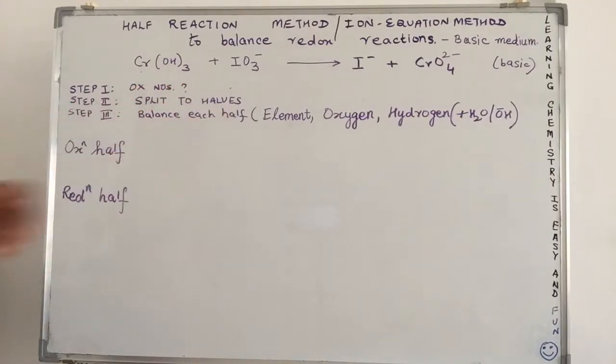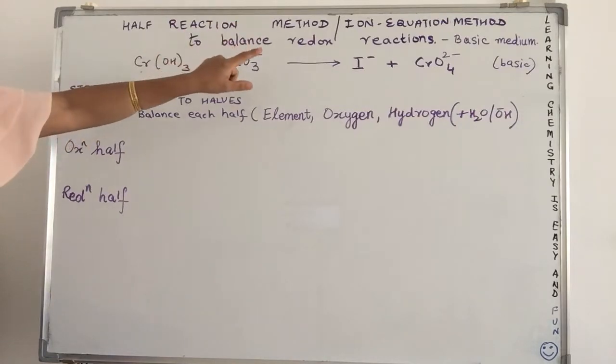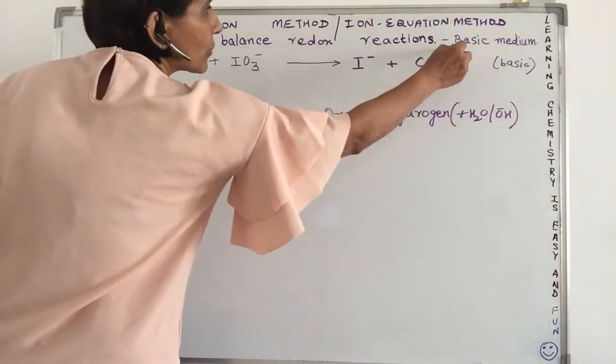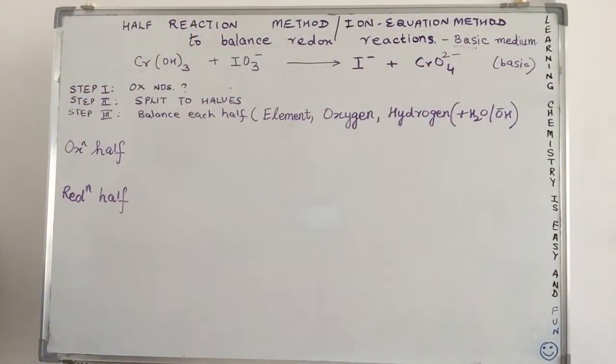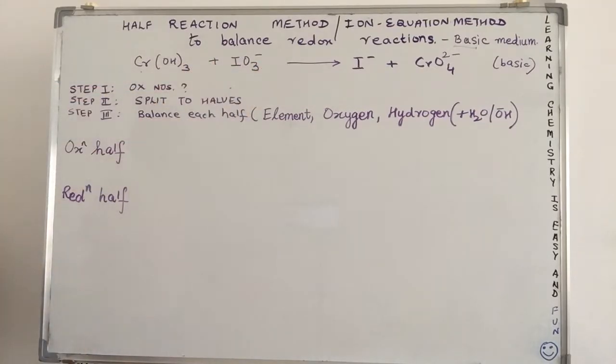Hello dear students, welcome to Learning Chemistry is Easy and Fun. The topic that we are taking up today is the half reaction method or the ion-equation method to balance redox reactions in a basic medium. We have already dealt with balancing in an acidic medium. The equation is listed for you, Cr(OH)₃²⁺ + IO₃⁻ gives you I⁻ + CrO₄²⁻. The difference between these equations and a molecular equation is that you have to be careful about the charges as well. The sum of the charges on the reactant side should be equal to the sum of charges on the product side because we know that mass can neither be created nor destroyed.